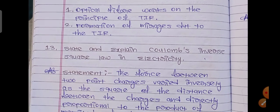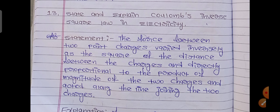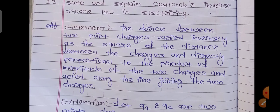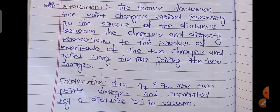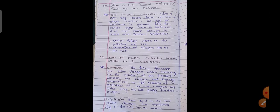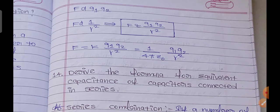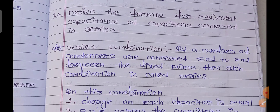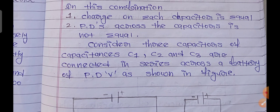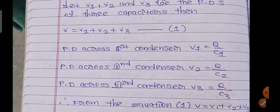12th answer: what is total internal reflection — give any two examples. Two points you can write. 13th one: state and explain Coulomb's inverse square law in electricity. Write the statement, then the explanation. At least try to draw these formula boxes. 14th one: formula for equivalent capacitance of capacitors connected in series combination — first and second points.